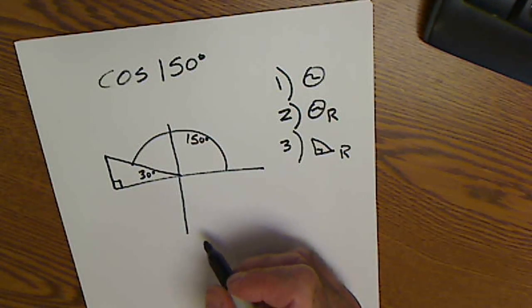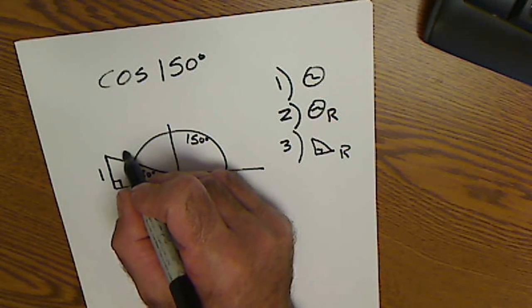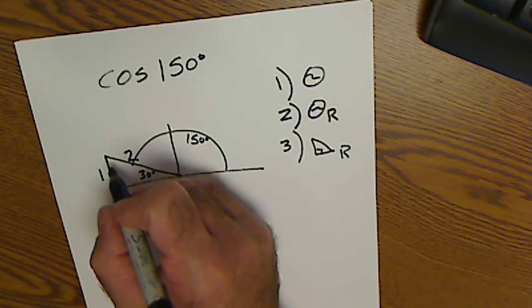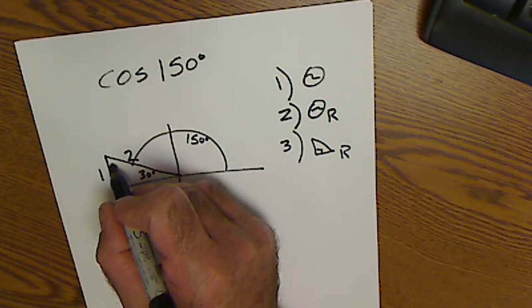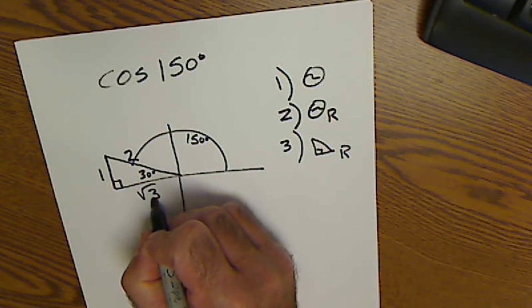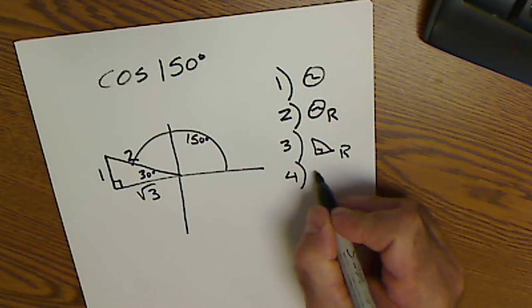Always side opposite 30 is 1. Hypotenuse is 2. Side, this is 30, this is 60, this is root 3. Step 4 is double check negatives.